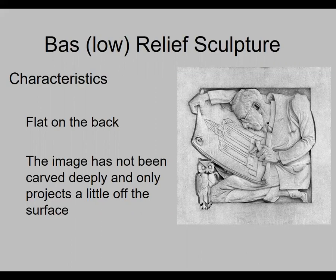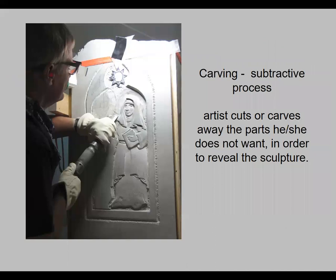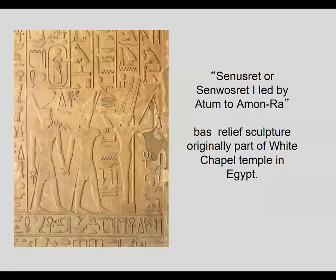All relief sculptures are flat on the back, and a lot of times they're attached to buildings. In bas relief, the image hasn't been carved very deeply and it only projects a little bit off the surface. Bas relief is a carved, subtracted process where you get rid of everything you don't want in order to reveal the sculpture. Carving can relate to bas relief, sculpture in the round, or sculpture as part of an environment, but right now we're just talking about bas relief.